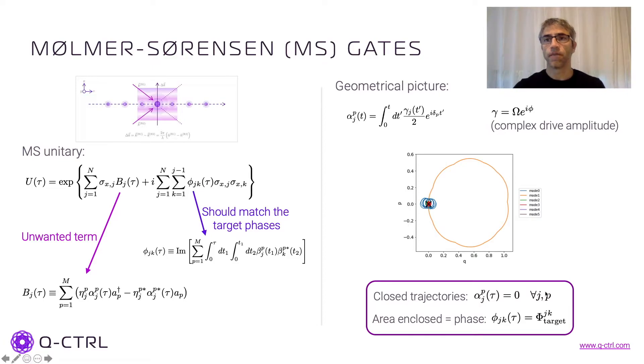We want those alphas to be zero, which means that those curves come back to the starting point at zero in the end. So that's the first condition for the gate to work. And the other condition obviously is that we have the phase to be the desired phase. And those phases are related to the area enclosed by this curve.